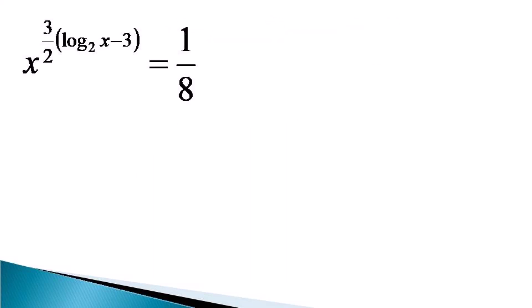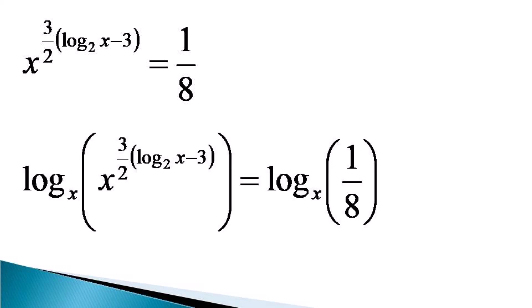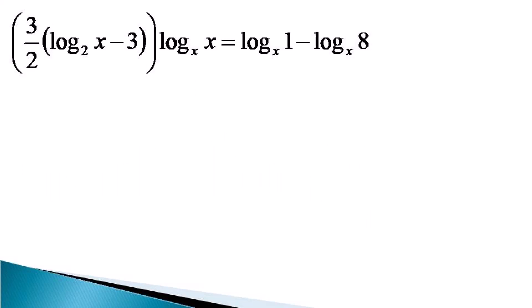So, to solve this equation we take log of both sides to the base x, which reduces the equation to 3/2 · log x to the base 2, minus 3 · log x to the base x, being equal to log 1 to the base x minus log 8 to the base x.